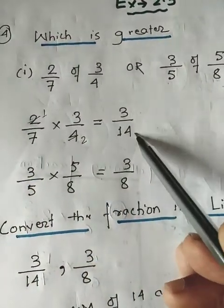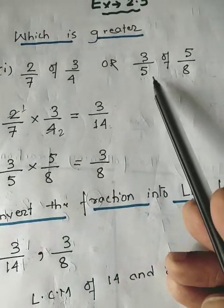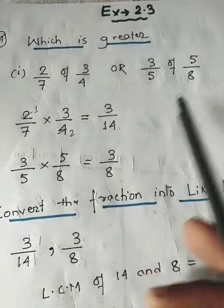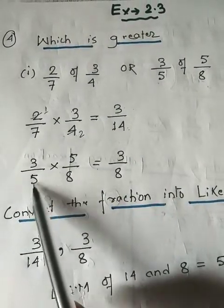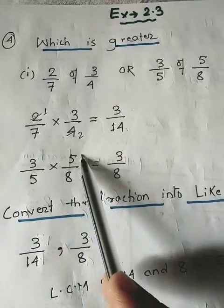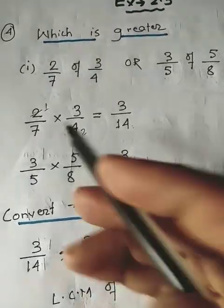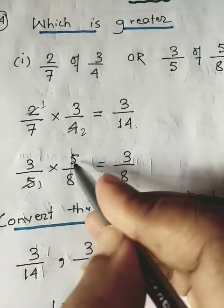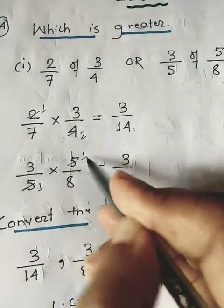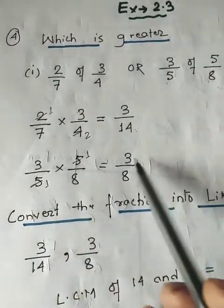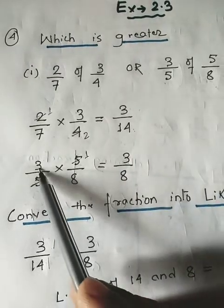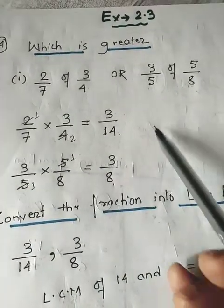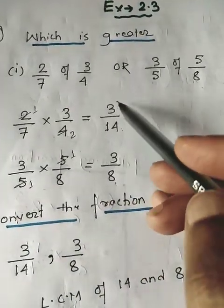The same way, find the product of the second pair: 3/5 into 5/8. You can reduce it — 5 ones are 5, 5 ones are 5. So 3 ones are 3, 8 ones are 8. The product is 3 upon 8.